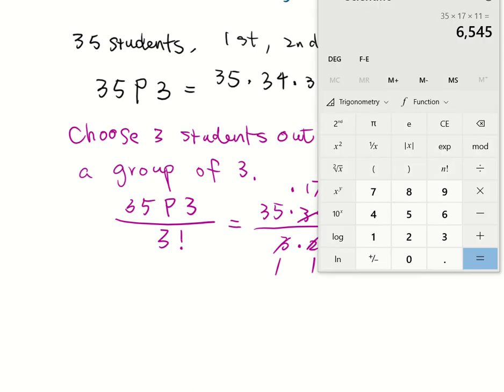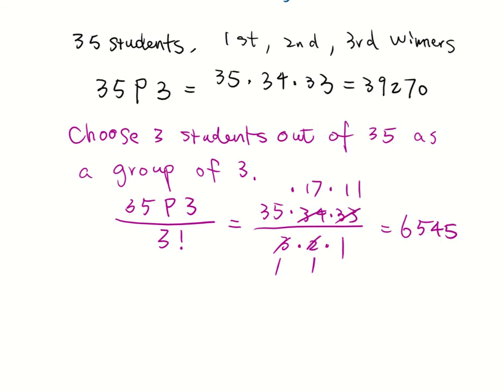Using my calculator, that's 6545. If you look at the two answers, we can see that if the order does not matter, you get a lot less cases. Because you don't have to count for the cases where you put the 3 numbers in order. So you have a lot less cases.